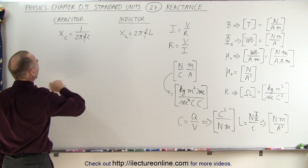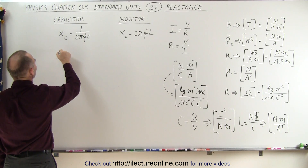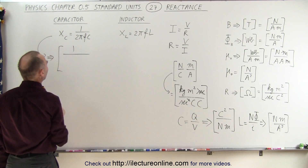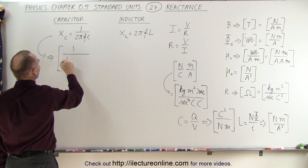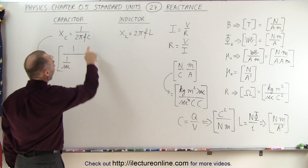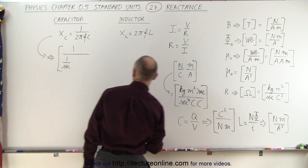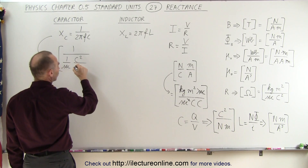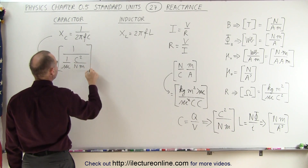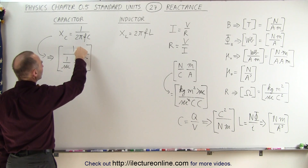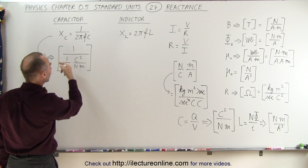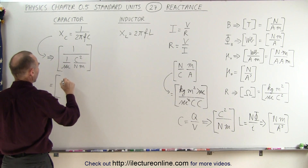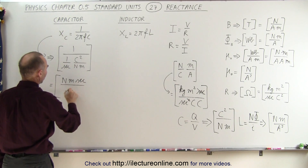Now let's find the units for capacitive reactance. Unit-wise, we have 1 divided by 2π — which has no units — times frequency, which is 1 per second, times capacitance, which is coulombs squared per newton times meter. Moving what's in the denominator to the numerator, we get newton meter seconds per coulomb squared.